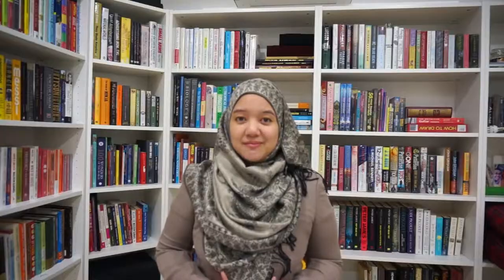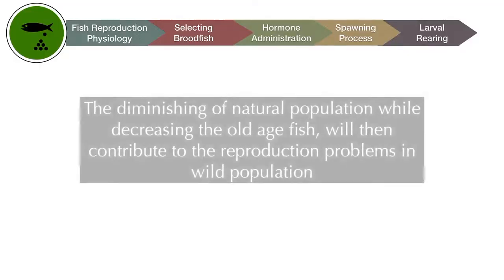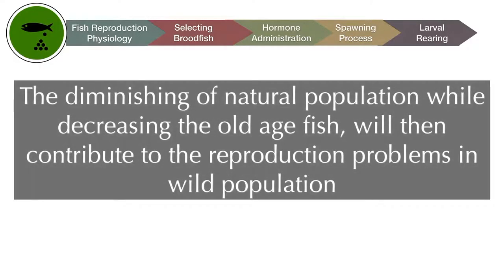By the end of this course, you can apply what you have learned here to any type of fish species. This knowledge is applicable from your small pet fish to as large as commercial fish. The reduction of natural population and the decreasing of older fish will then contribute to reproduction problems in wild populations.